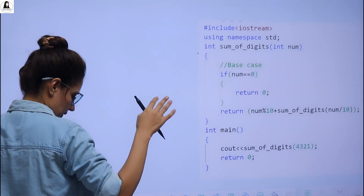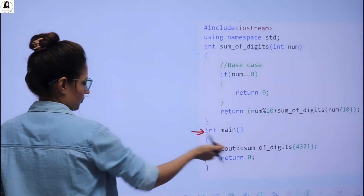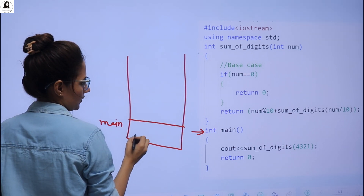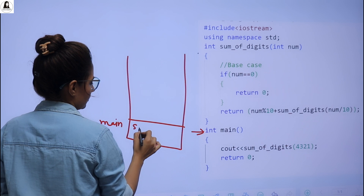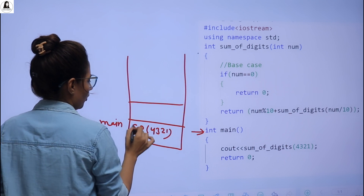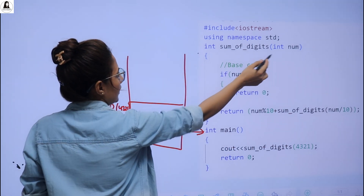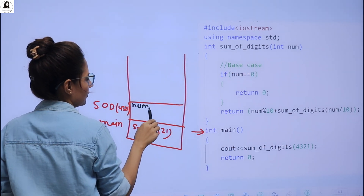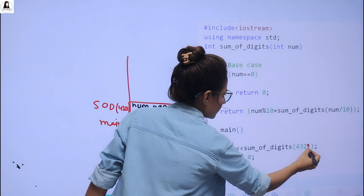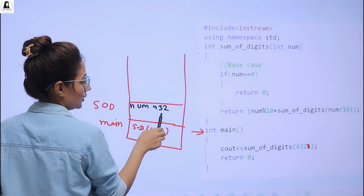Let me walk through what is happening here. At first control goes to main, and here we have cout sumOfDigits called with 4321 — so in the stack we have one activation record for main. We are calling the function sumOfDigits — SOD for short — and here we have 4321. So for 4321 we have an activation record. Control goes to int num. Let's consider only 432 to keep it shorter.